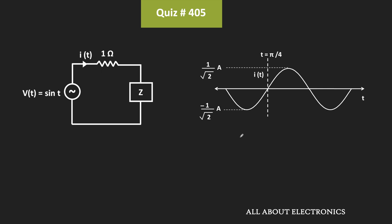So if you closely observe this graph, then here the current is varying between 1/√2 to –1/√2. Moreover, we have also been given the time at this point. So as you can see, at the origin, this time t is equal to π/4. So basically, it shows the phase shift between the voltage and current.